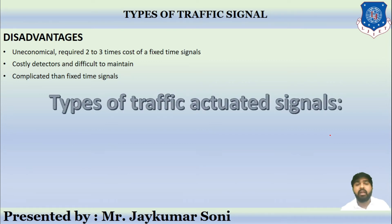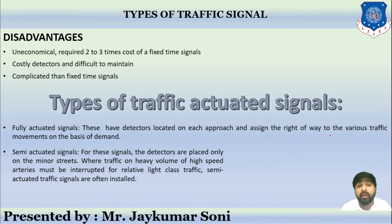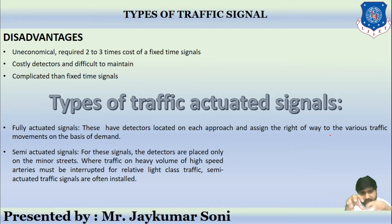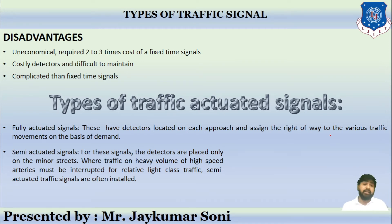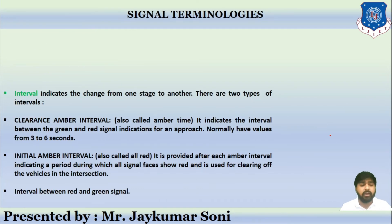The disadvantages are that they are uneconomical, requiring two to three times the cost of fixed time signals due to sensor costs. They use costly detectors that are difficult to maintain and are more complicated than fixed time signals. The types of actuated signals include fully actuated — with detectors on each approach, assigning right-of-way based on demand — and semi-actuated, where detectors are placed only at minor streets where heavy or high-speed traffic may be interrupted for lighter traffic.